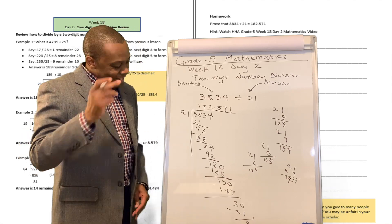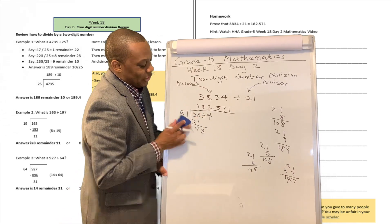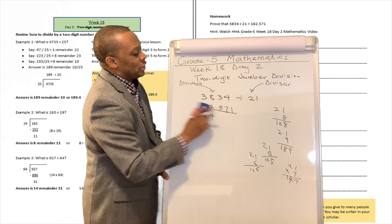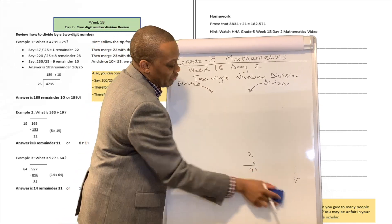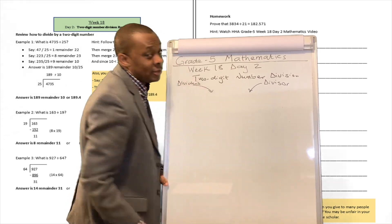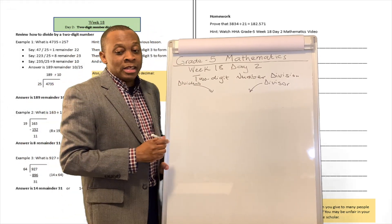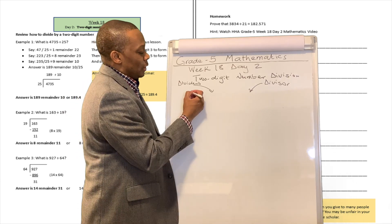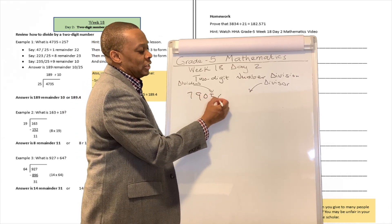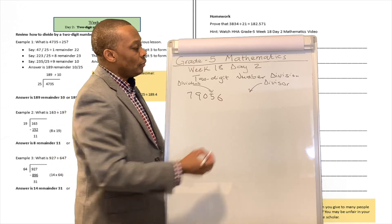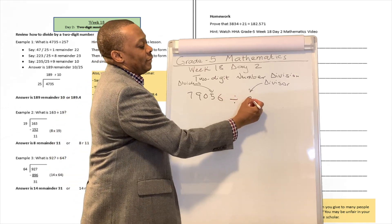Want to do another one? Let's do another exercise so that we can master how to do this very well, because it's going to be coming up in your examination — you've got to be a master of it. So let's do this one: 79,056 divided by 34.